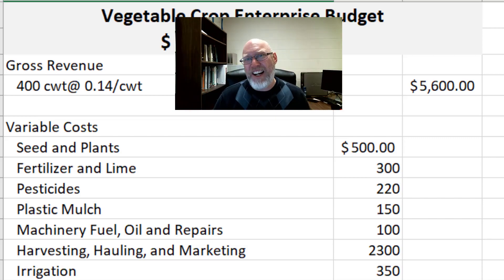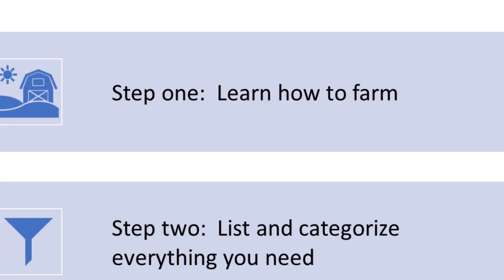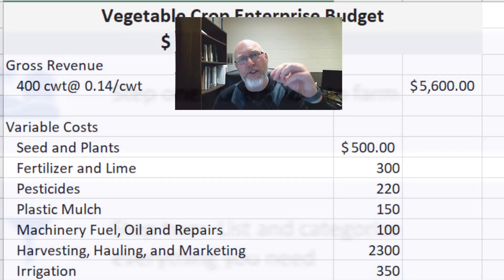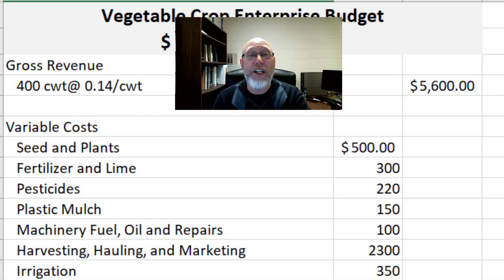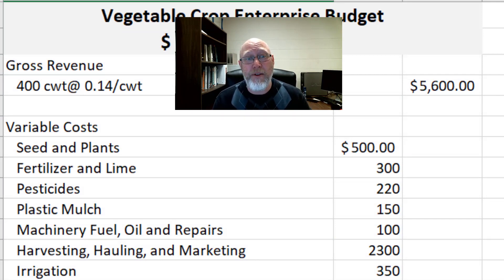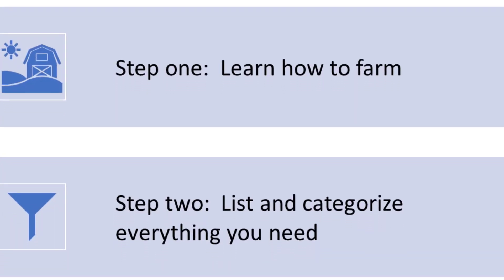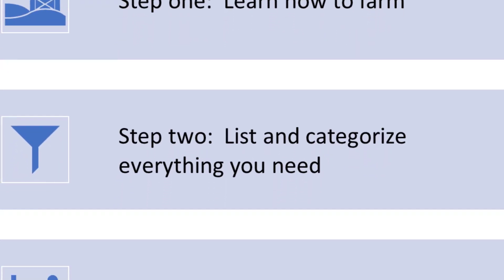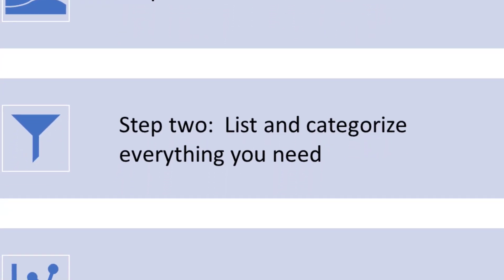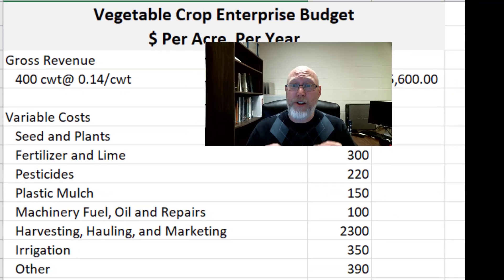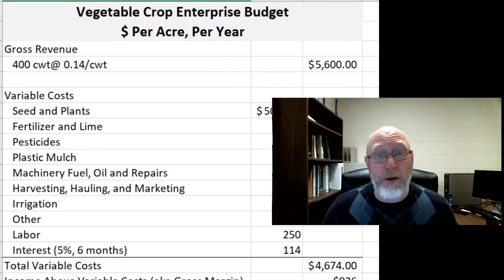Step one: actually learn how to farm — learn how to do the thing you're trying to build a budget for. The person who is closest to the actual operations of the enterprise is the person best suited to develop the budget. A budget is nothing but a list. If you know how to make a list, you know how to make a budget. The extra layer on top of that is that budgets are financial documents.